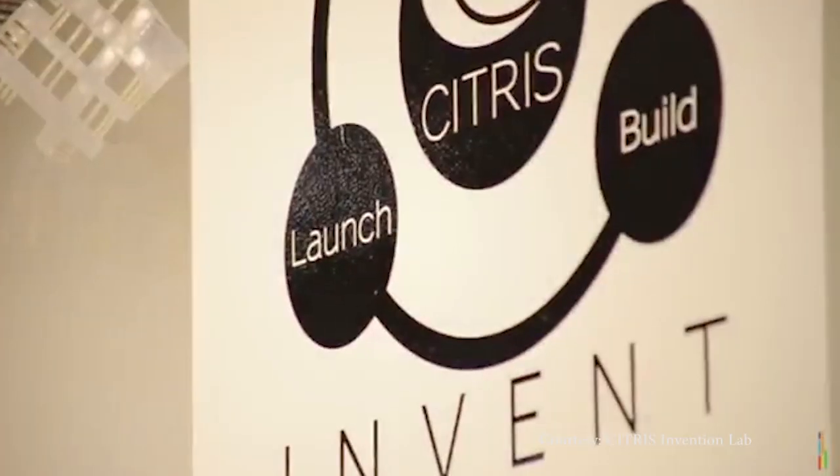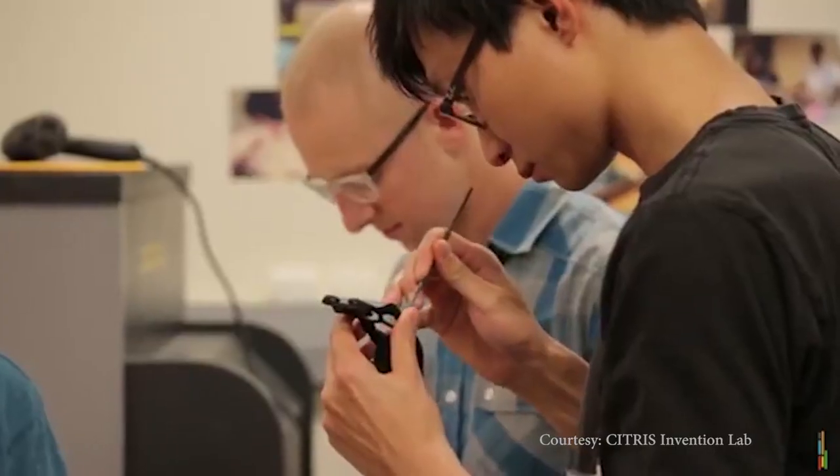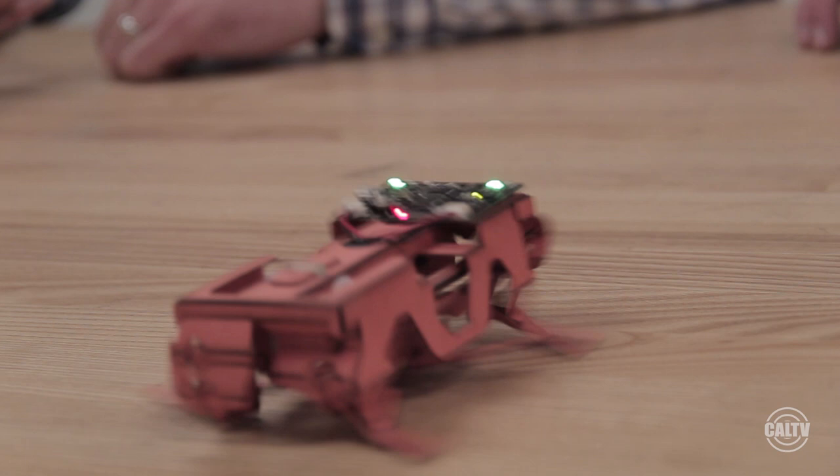Dash Robotics is an example of how innovation meets success here in the Silicon Valley. If you're working on something and you think you can form a company about it, now in Berkeley the resources exist for you to be able to realize that.